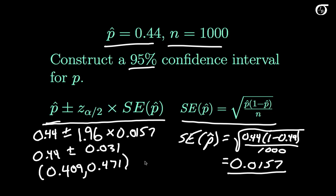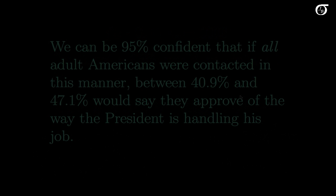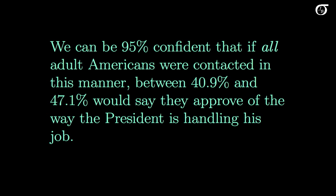It is a 95% confidence interval for p, the parameter p, so we can be 95% confident that the parameter p lies within that interval. What does that mean in the context of this problem? It means that we can be 95% confident that if all adult Americans were contacted in this manner, between 40.9% and 47.1% would say they approve of the way the president is handling his job.